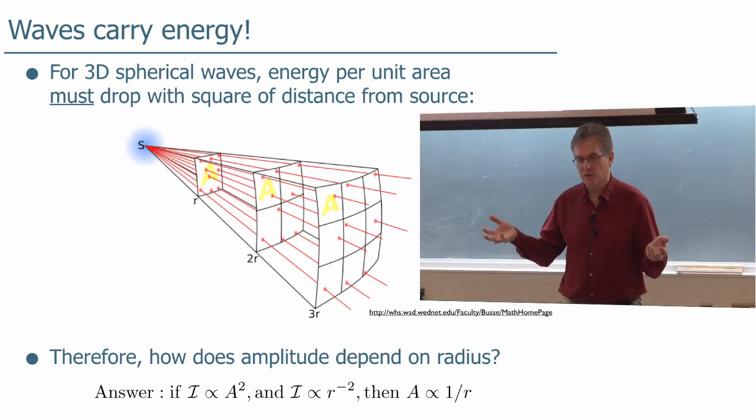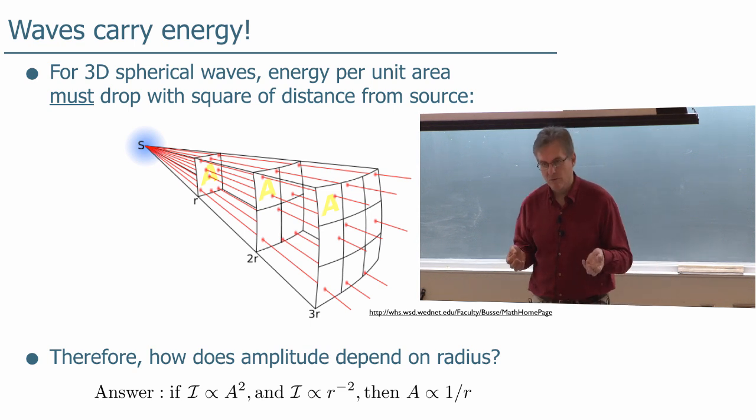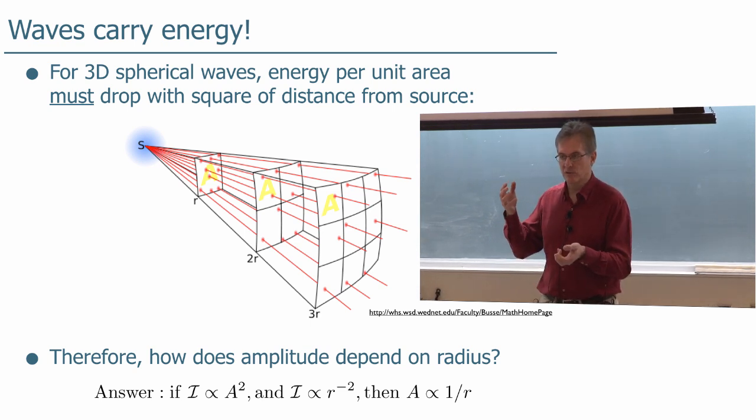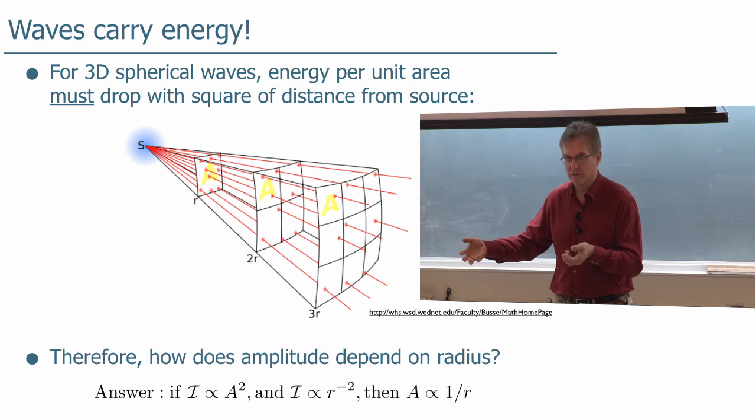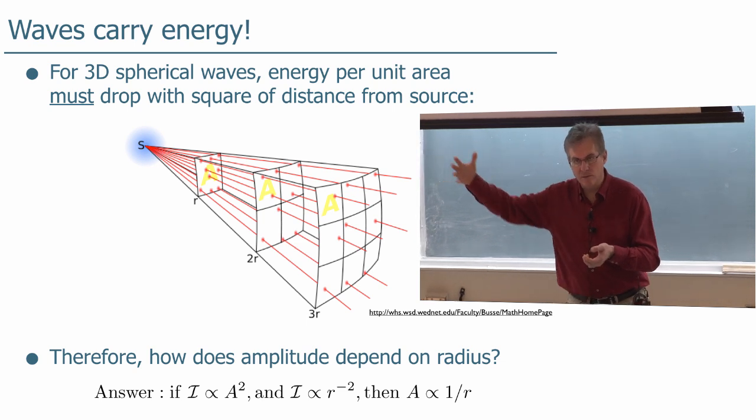If the intensity is proportional to the square of the amplitude, which we said is true, and we have the intensity is proportional to one over the square of the distance, because as you go through larger and larger areas, the intensity must be decreasing by that area.